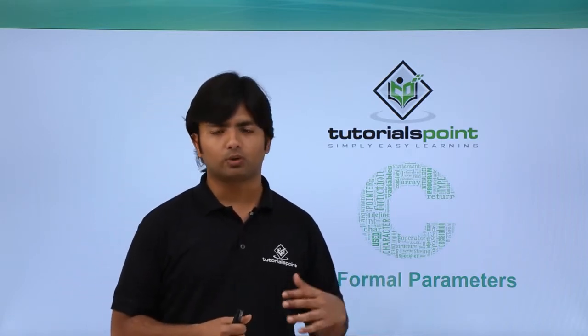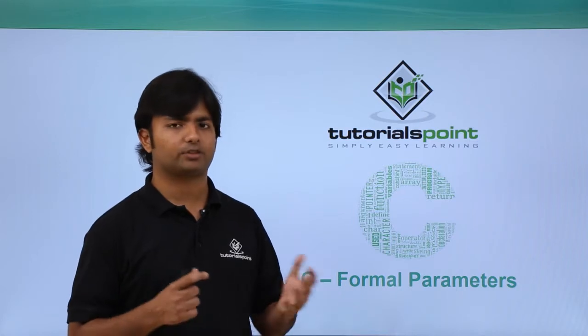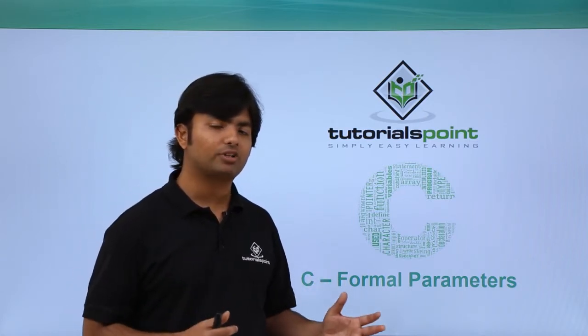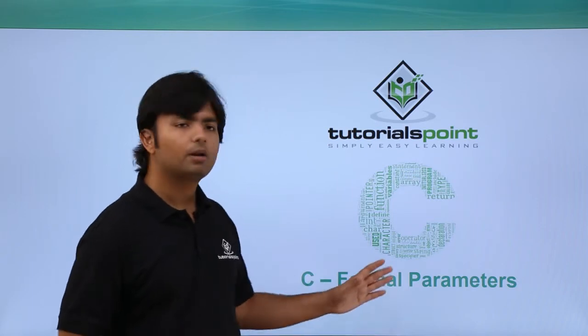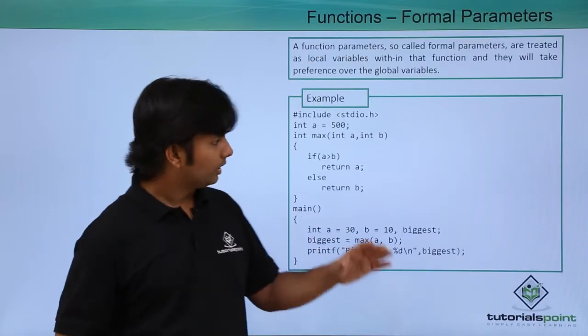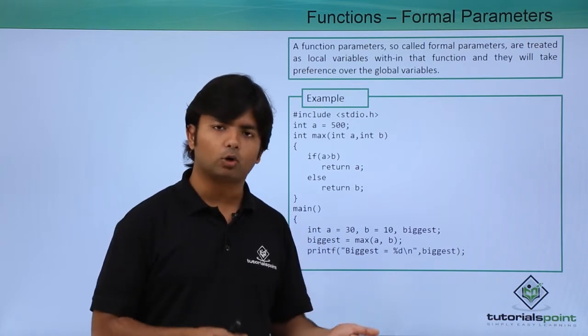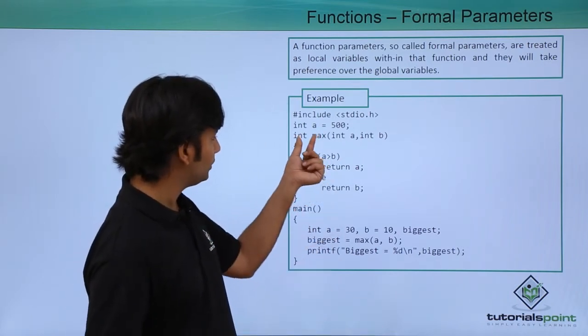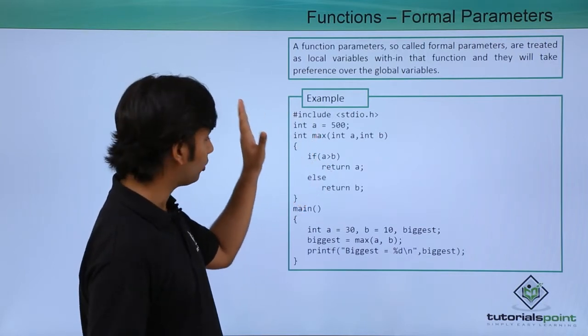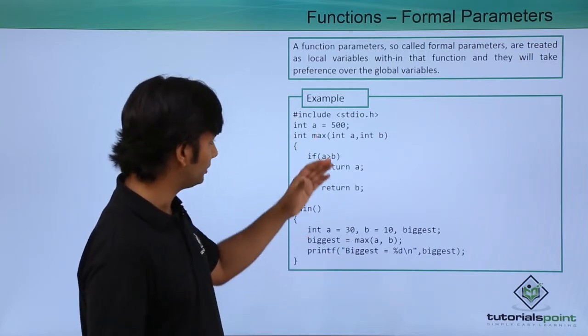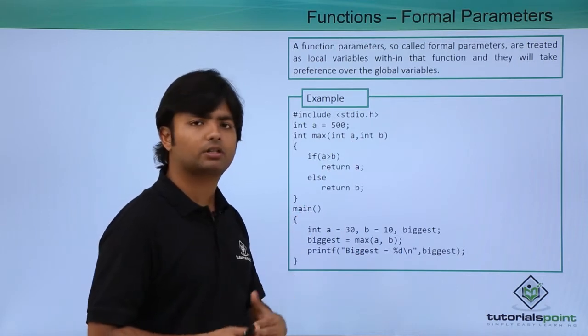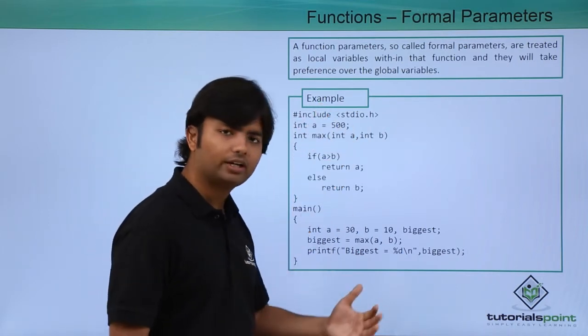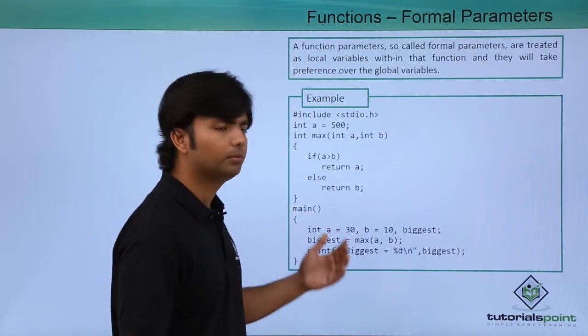As we have already discussed while working with methods, by the time we are defining a method, the parameters or arguments which we pass are the formal parameters. The scope of formal parameter is again like local variable - within the method only. As here you see the max method which we have already discussed, int a and int b is nothing but the formal parameters. If you want to access this a and b outside of it, you will not be able to do that.